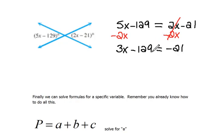And again, now we have numbers that we can put together. So I'm going to have to move the negative 129 across the equal sign by doing the opposite operation. I'm going to add 129 to both sides. So now we have 3x equals negative 21 plus 129, which would be positive 108.